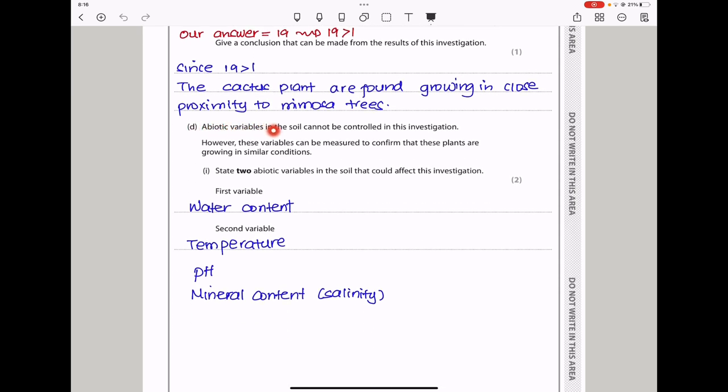In part D, abiotic variables in the soil cannot be controlled in this investigation. However, these variables can be measured to confirm that these plants are growing in similar conditions. State two abiotic variables in the soil that could affect this investigation. There is going to be water content of the soil, pH of the soil, the mineral content or salinity of the soil, the temperature of the soil, and so on.